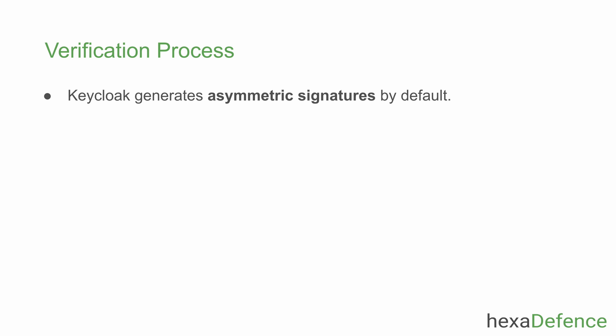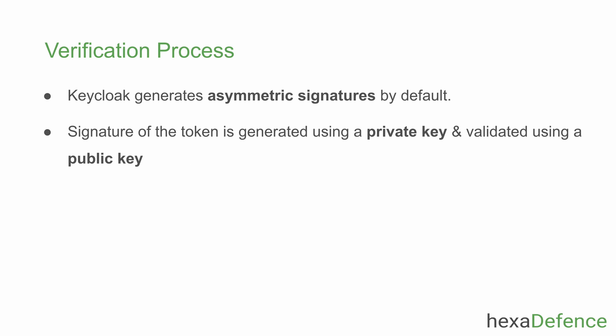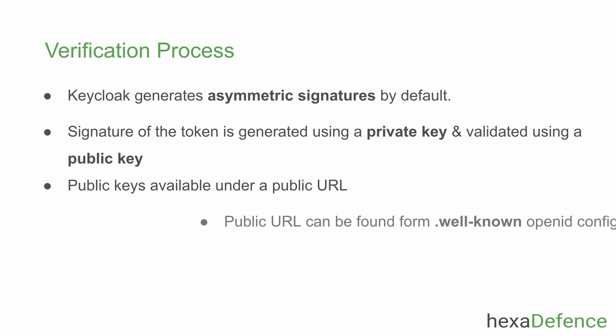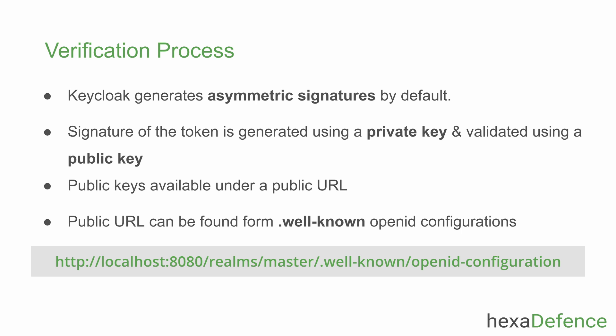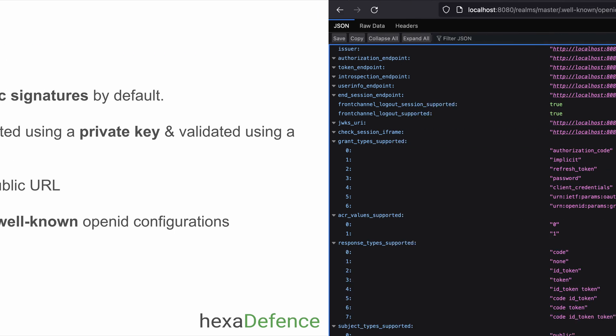My identity provider Keycloak by default generates JWT tokens with asymmetric key signatures. That means the signature of the JWT access tokens is created using a private key and must be verified using the corresponding public key. Both public and private keys belong to the identity provider. Any standard identity provider including Keycloak makes public keys available under a public URL accessible to anyone. This URL can be found using the OpenID Connect well-known configuration of the identity provider.